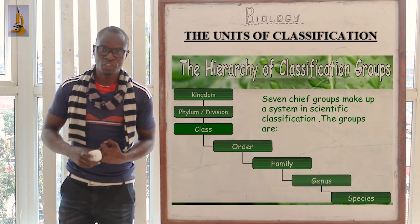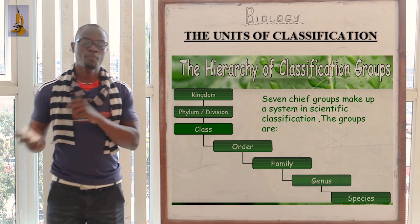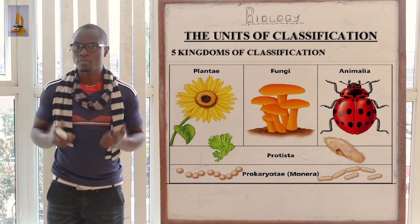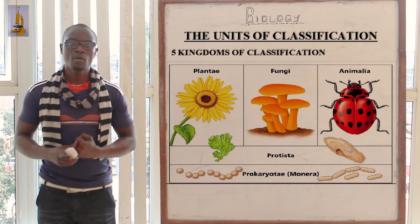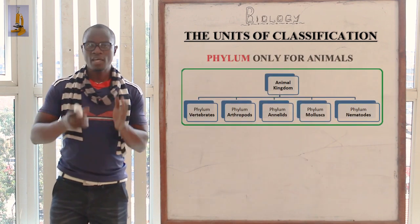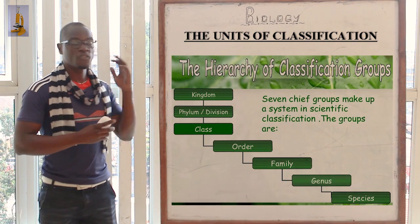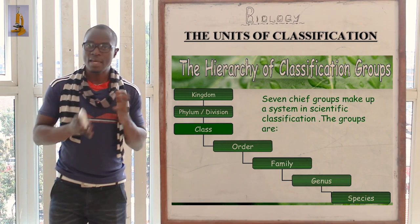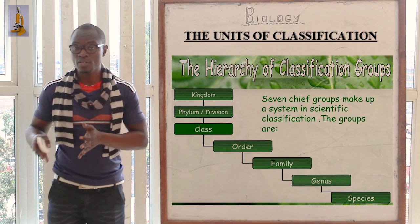Now let's look at the units of classification. The first is the kingdom, which comprises all living organisms — be it plants or animals. We have five kingdoms of classification: Kingdom Monera, Kingdom Protoctista or Protista, Kingdom Fungi, Kingdom Animalia, and Kingdom Plantae. The next unit is phylum or division. Phylum is only responsible for animals, while division is only responsible for plants. If asked to list units of classification, never miss listing phylum or division — you must list both.